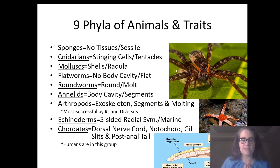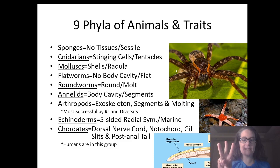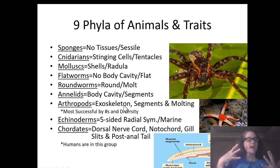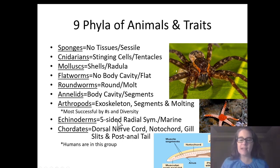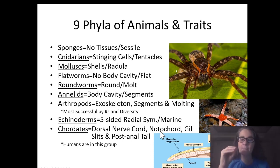The most successful animal group by number and diversity on Earth is arthropods — including crustaceans, insects, millipedes, centipedes, and arachnids like spiders and ticks. They all have an exoskeleton, body segments, and can molt readily. Echinodermata, like sea stars, have five-sided radial symmetry. And lastly, chordates — the group humans belong to — have a nerve cord and notochord that become backbones, and include fishes, frogs, amphibians, reptiles, birds, and mammals.